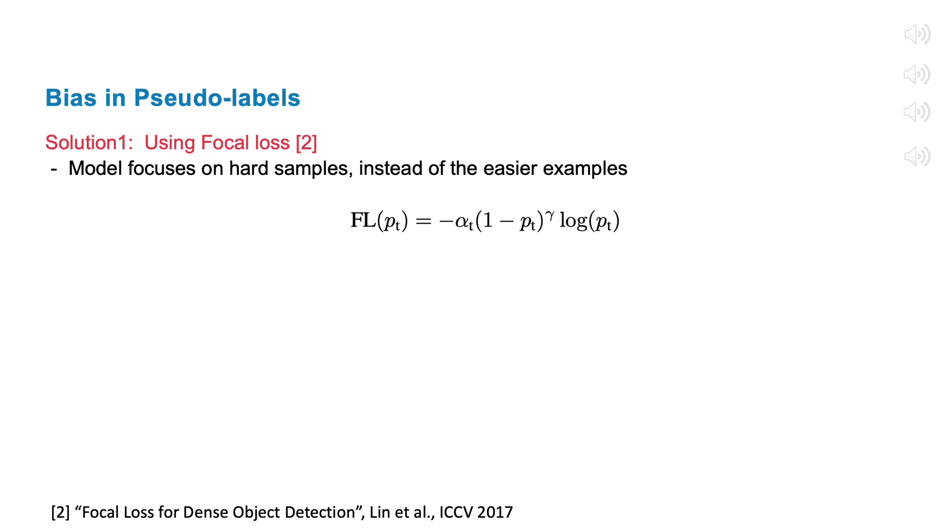Our Unbiased Teacher applies two techniques to address the pseudo-label bias issue. First, when we train the ROI head, we replace the cross-entropy with the focal loss, which puts more weight on the low confidence instances. Therefore, it makes the model focus on the hardest samples, which are least likely from the dominant classes.